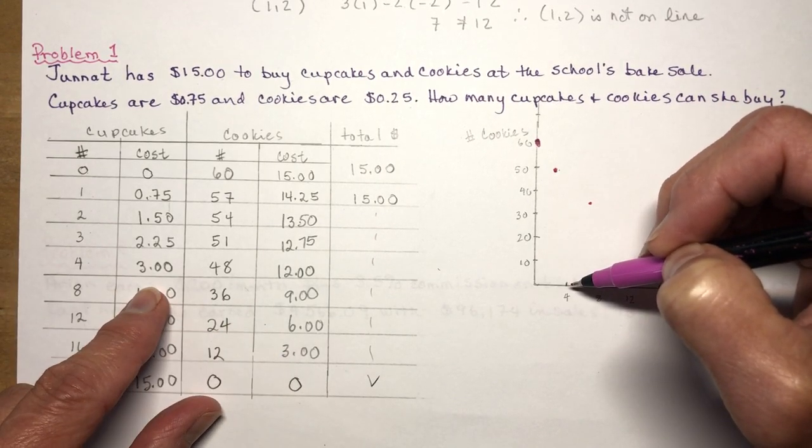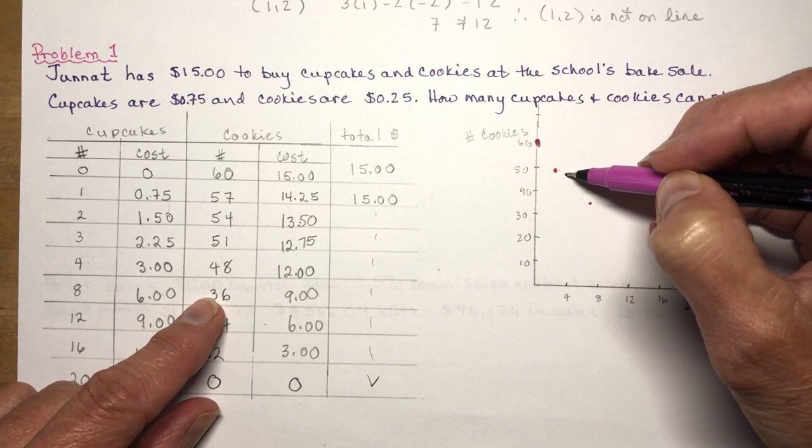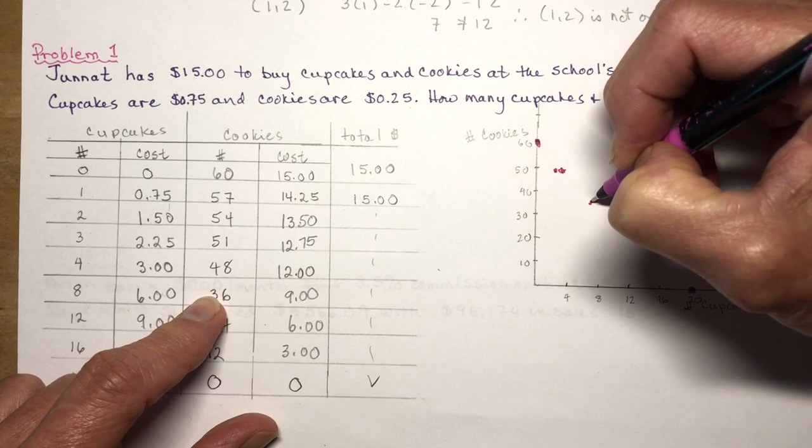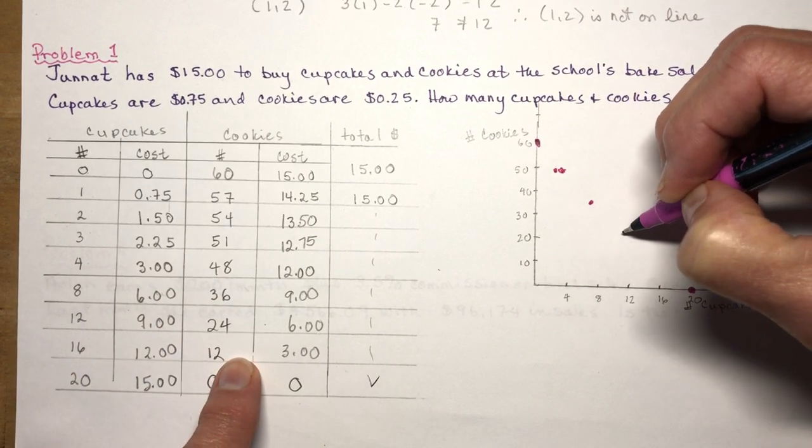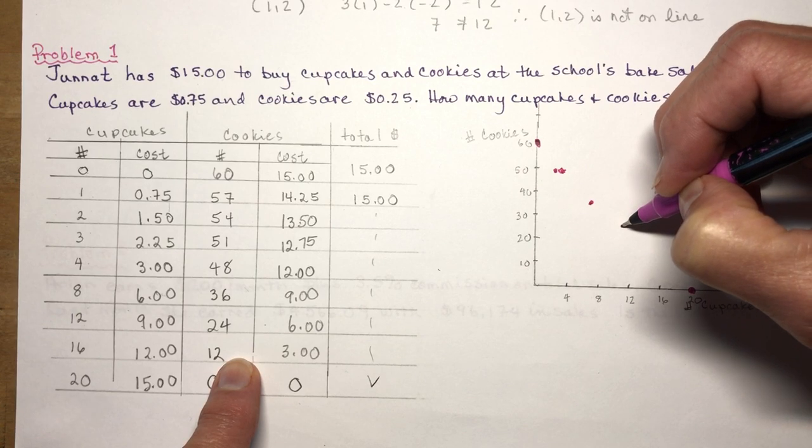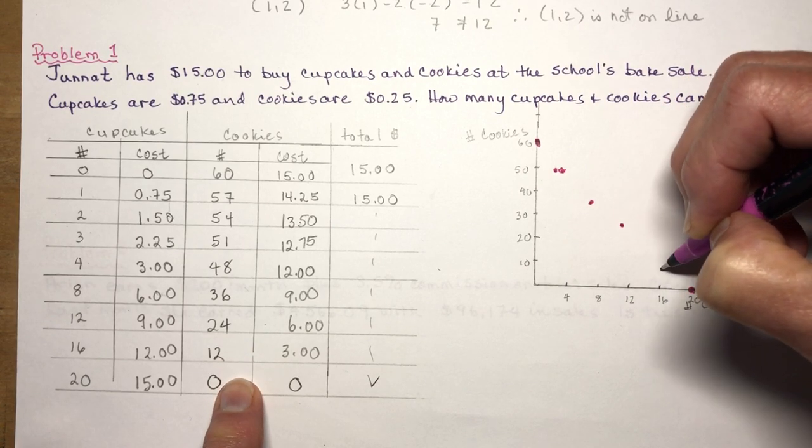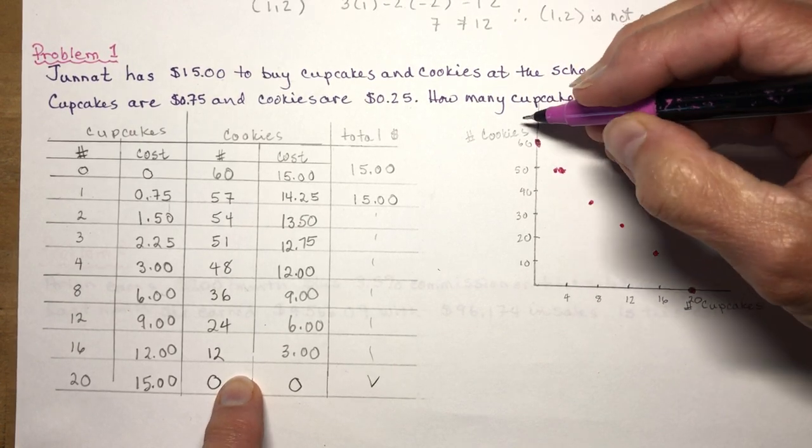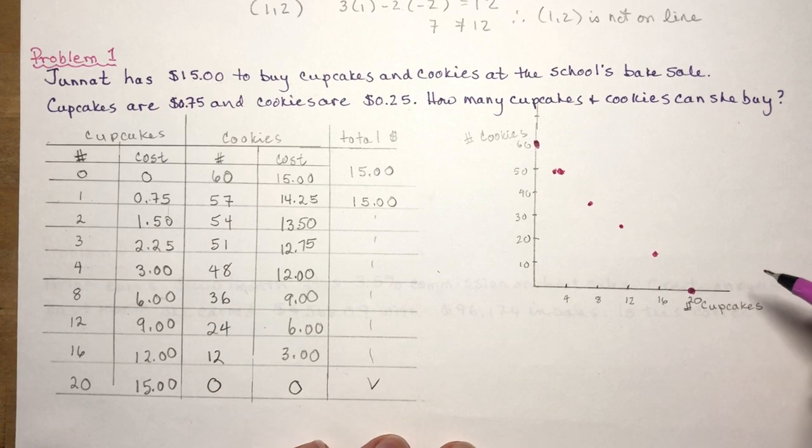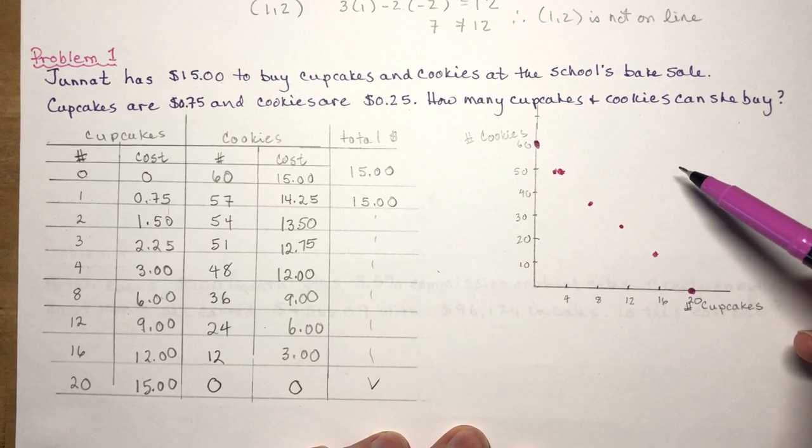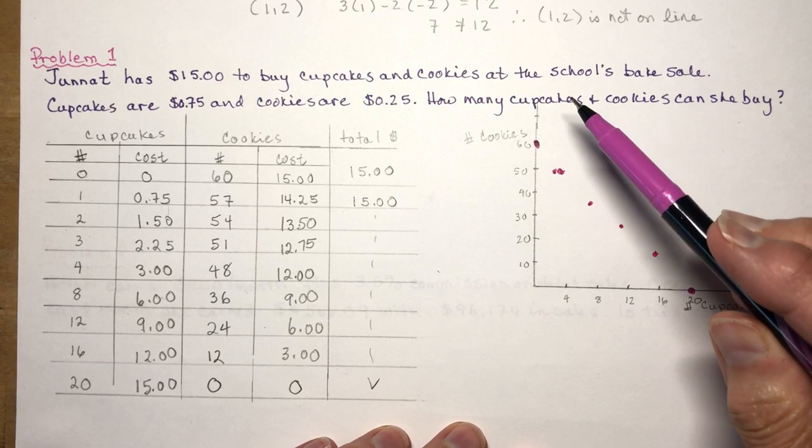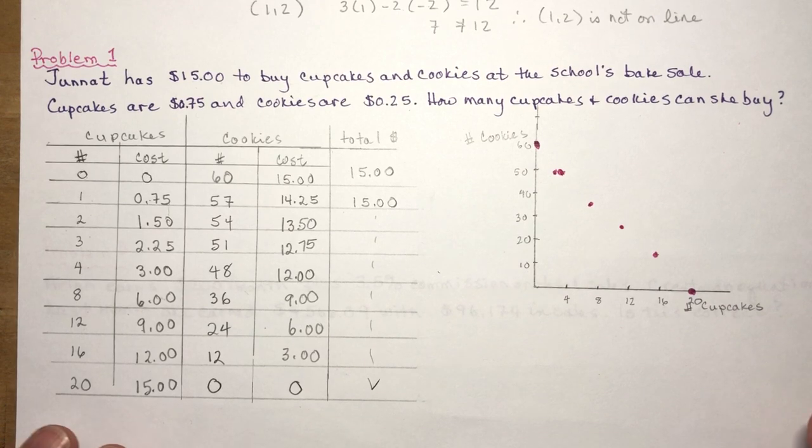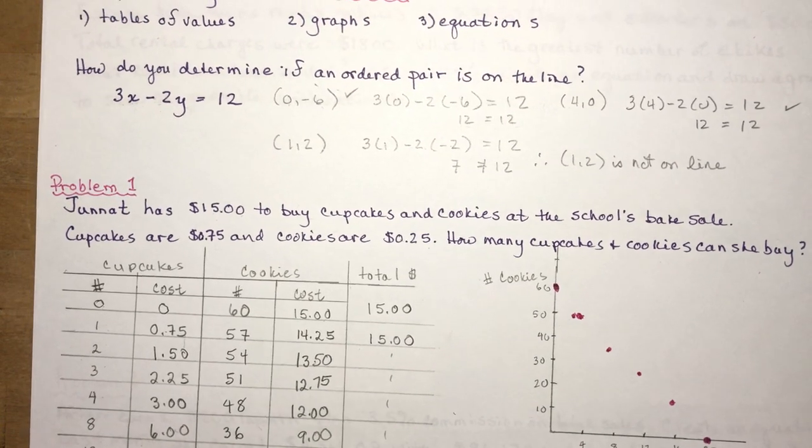So when I was at four, I was 48. My line is over a little bit. I should have been over here a little bit more. So you can see, I'm going to be like this, like this. 12 was 24 cookies, so about here. 16 was 12, that's about here. So you end up with a series of dots. And again, you can't join them because it's like saying I want to buy two thirds of one cupcake and one third cookies. So you cannot join them.